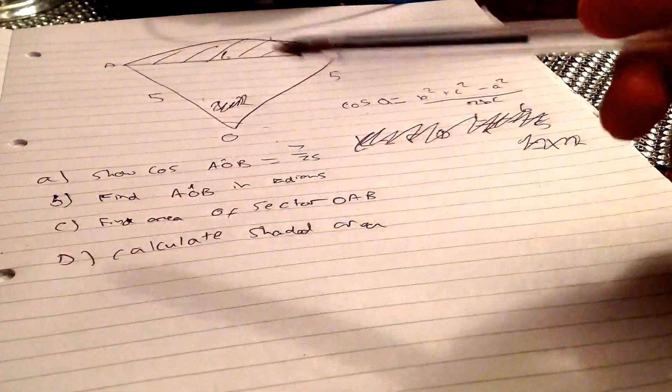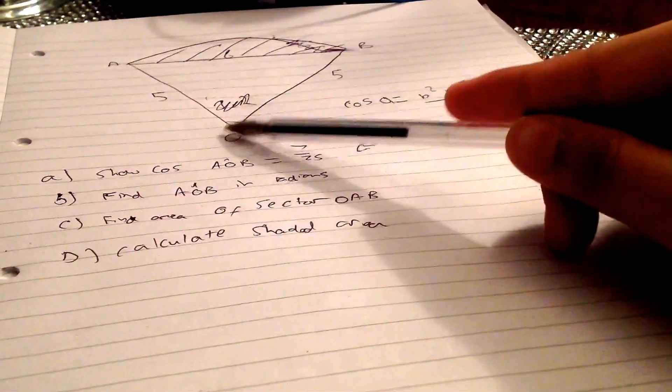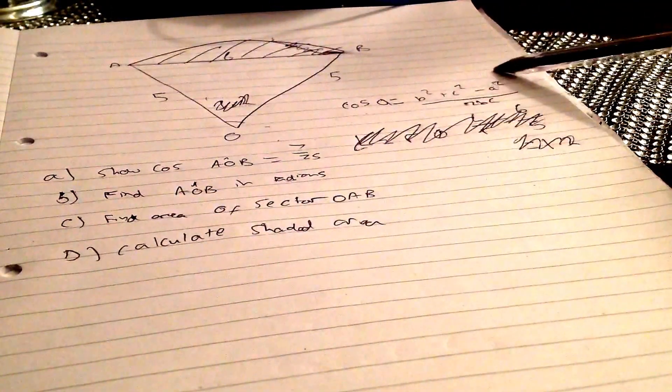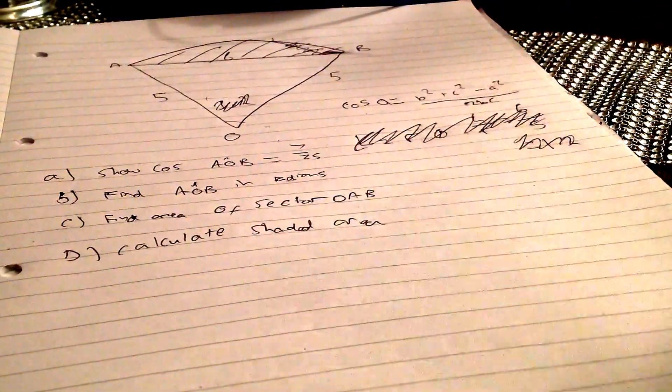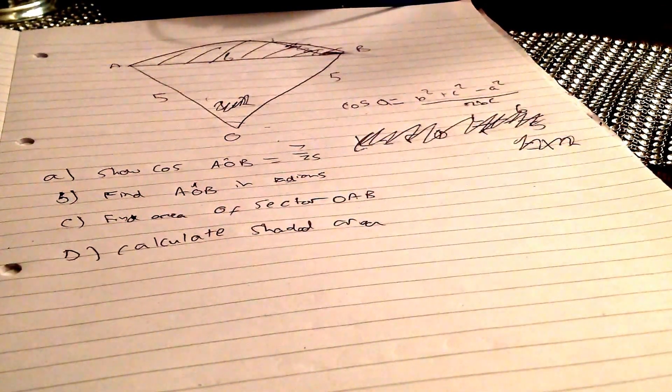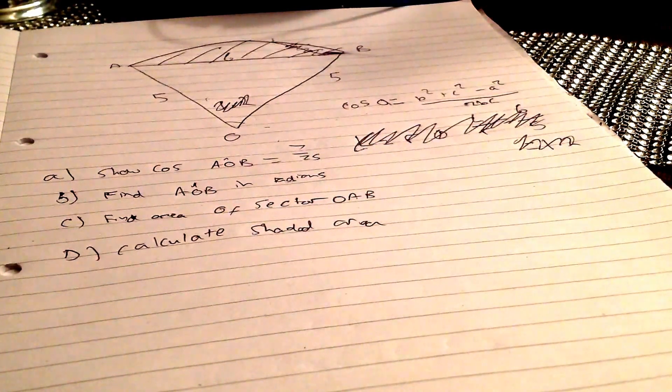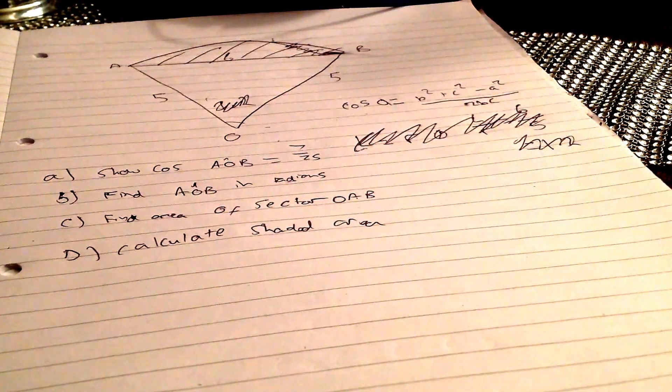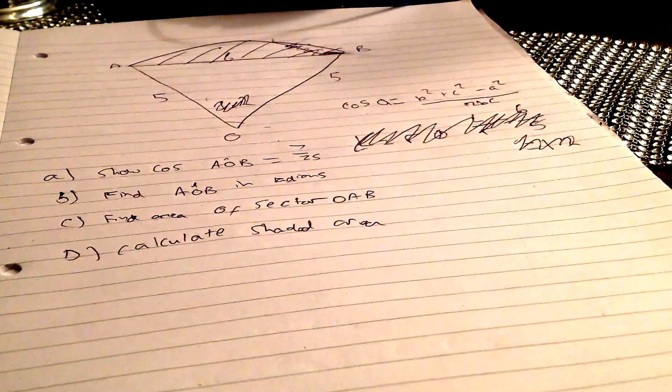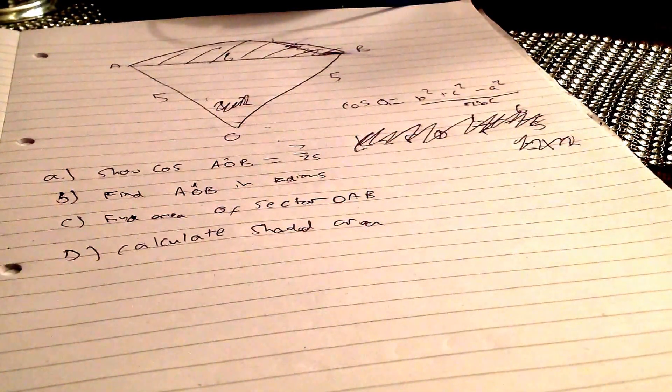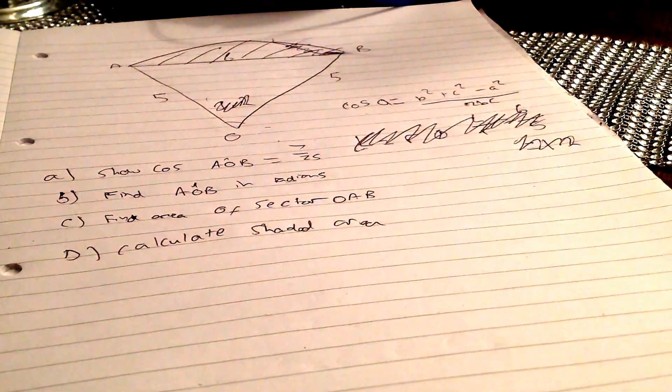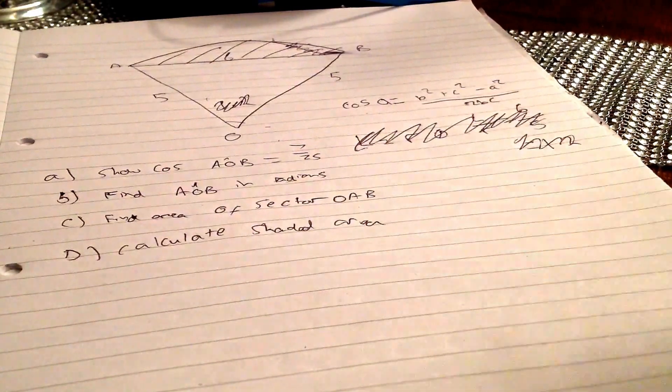It says to find cos of angle AOB, this angle here, and we need to use this formula: B squared plus C squared minus A squared over 2BC. Let's work that out. Cos of the unknown angle will be 5 squared plus 5 squared minus 6 squared, because A squared is 6 squared—that's opposite the angle we want to find. We divide all that by 2 times 5 times 5, and that gives us 7 over 25.